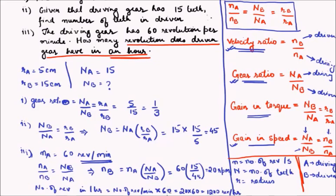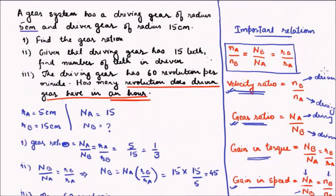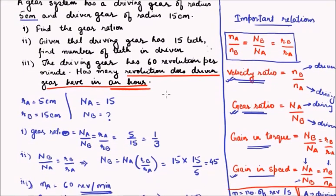This concludes the numerical. I hope you see how the relations are applied here. You might not be given the direct values to put in the equations, but you have to twist and see which equation fits to solve the question. The main idea is to understand the concept, to understand that the ratio between the number of teeth and the ratio between the radius is same, and the ratio between the number of teeth and the ratio between the rotational speed are inverse.